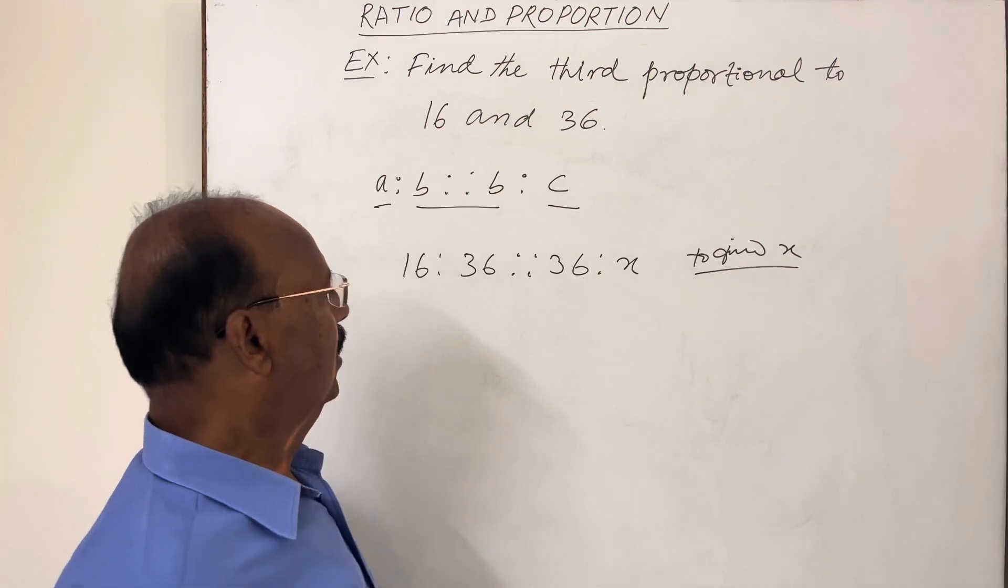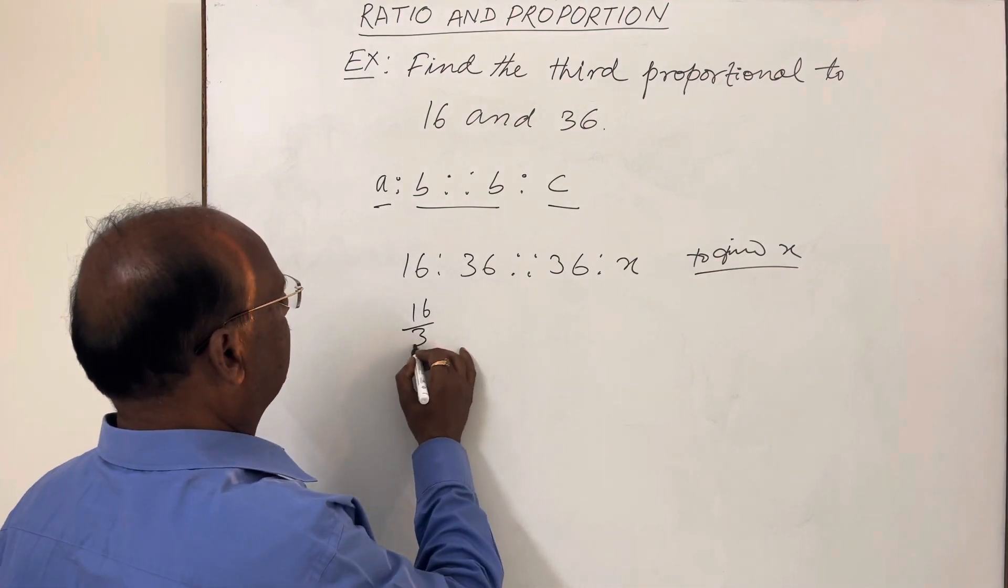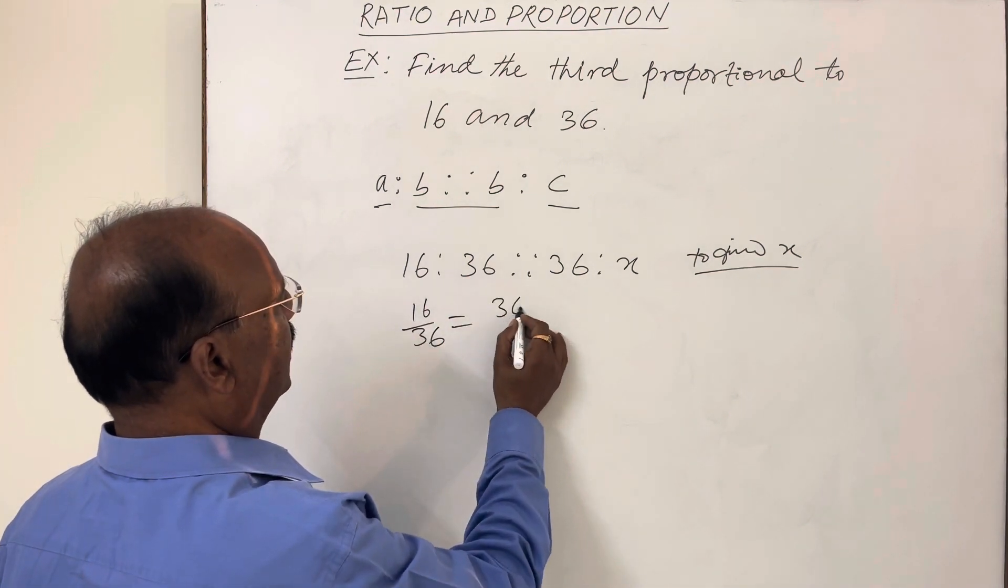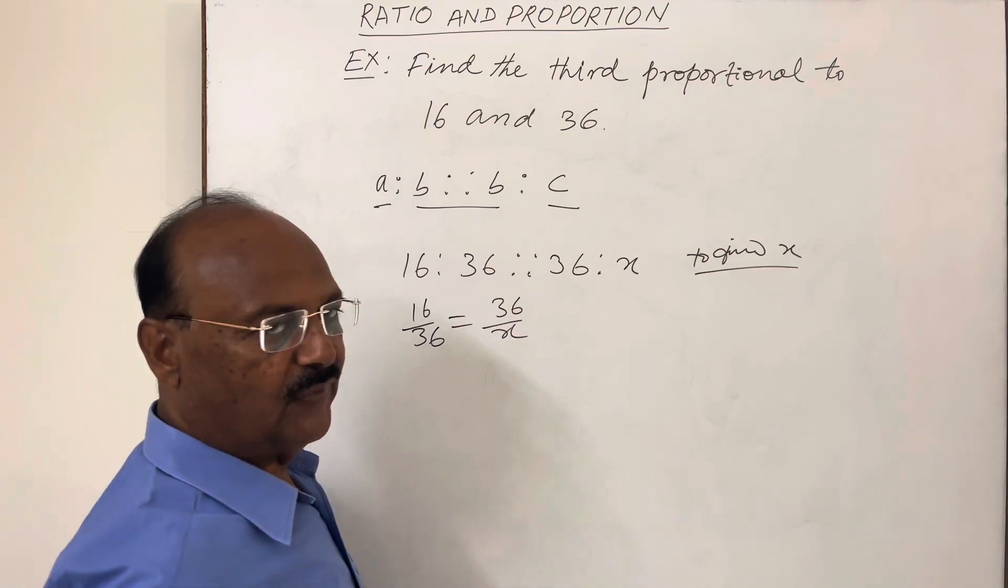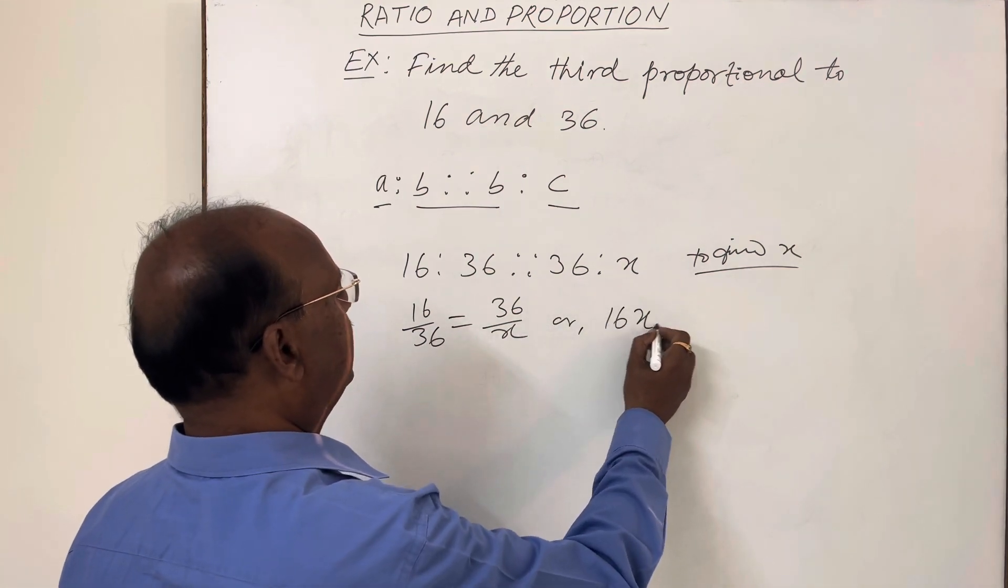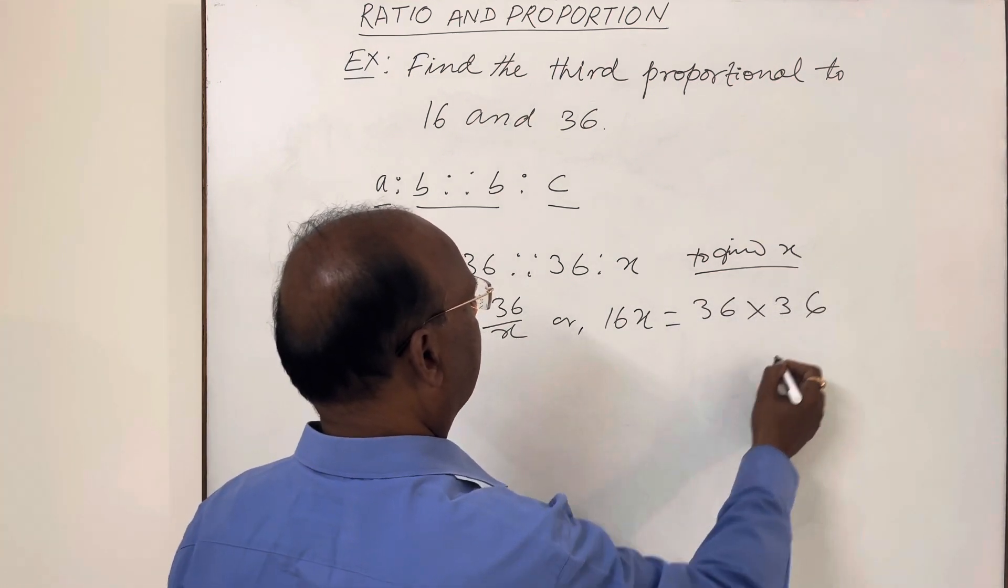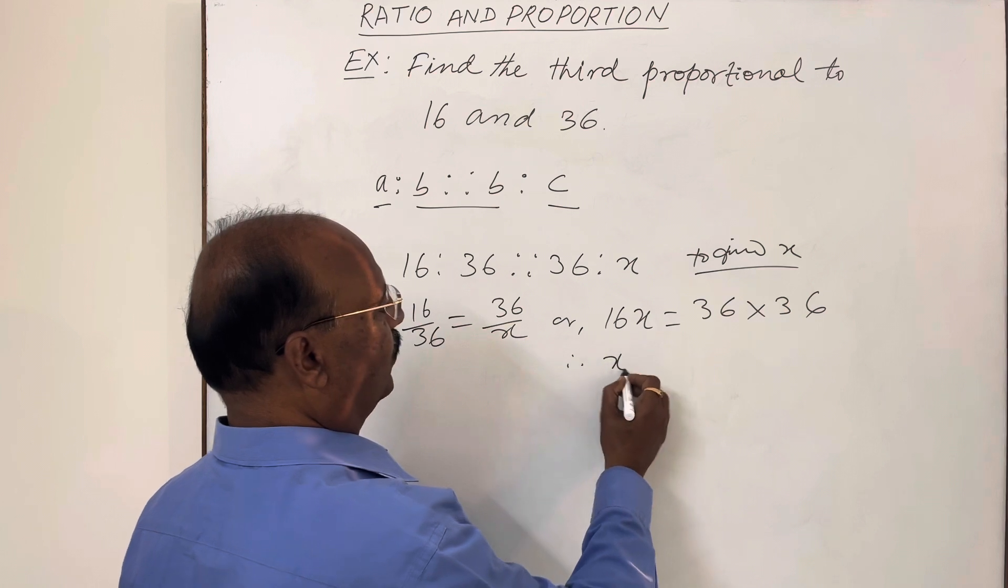So we know this can be written as 16 by 36 is equal to 36 by X. Or by cross multiplication, we can write 16X is equal to 36 into 36, and therefore X is